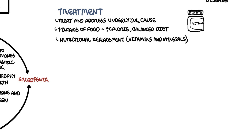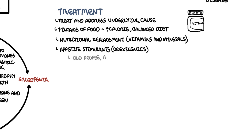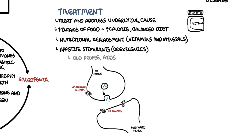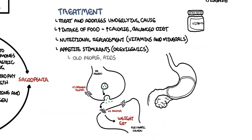Pharmacological options include appetite stimulants, also known as orexigenics, mainly used for older people or those with significant chronic diseases such as AIDS. Within the central nervous system, neurotransmitters are released that promote hunger and weight gain. Alpha-1 adrenergic receptors in the presynaptic neuron inhibit the release of these neurotransmitters, leading to weight loss. Mirtazapine is a drug commonly used in the elderly that inhibits alpha-1 adrenergic receptors, allowing neurotransmitters to be released and leading to weight gain. Side effects include somnolence and nausea.